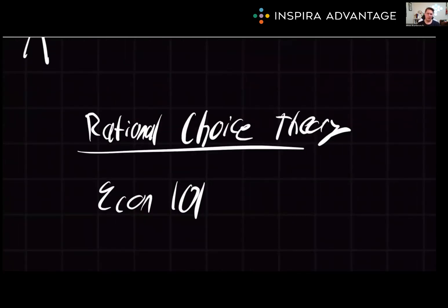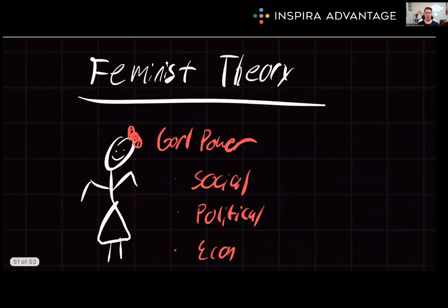Next, we have rational choice theory, which states that individuals make decisions that maximize benefit and minimize harm — basically economics 101. For example, employees may choose to work harder if they expect a promotion or pay raise as a result of their efforts. Similar to rational choice theory, we have feminist theory, which explores the ways in which one gender can be subordinated, typically focusing on the experience of women. It seeks to understand and challenge gender inequalities in various social, political, and economic spheres.